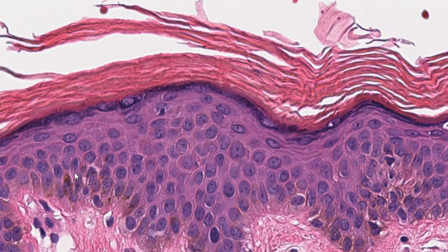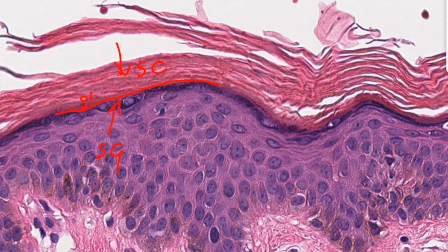The stratum lucidum is seen between the stratum granulosum and stratum corneum. We don't see it here in thin skin, but it would appear white or light — lucidum means it shines — so it would be lighter.